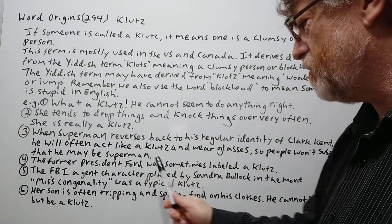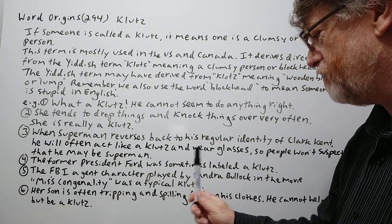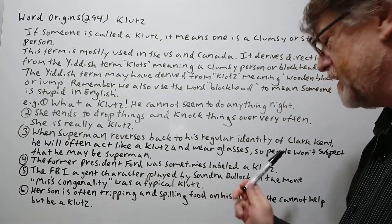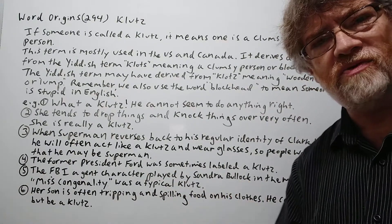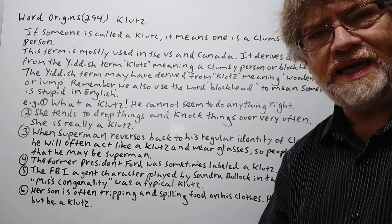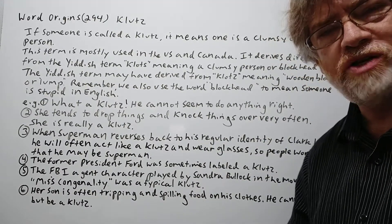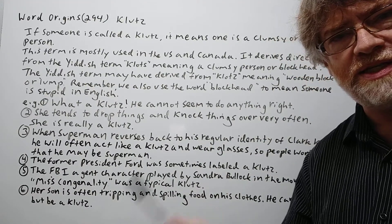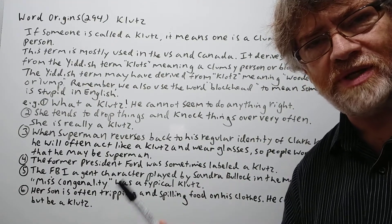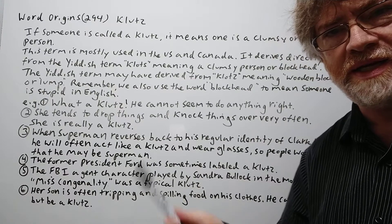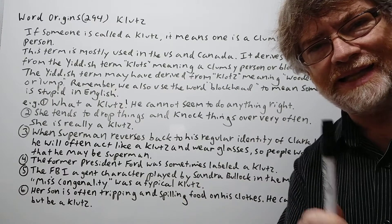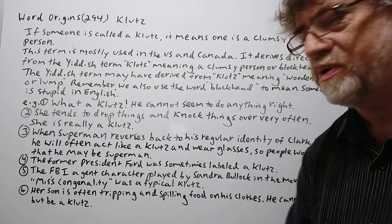Number four: 'The former president of Ford was sometimes labeled a klotz.' He did a number of clumsy things — he dropped things and tripped several times, and he kind of got that label while he was president.